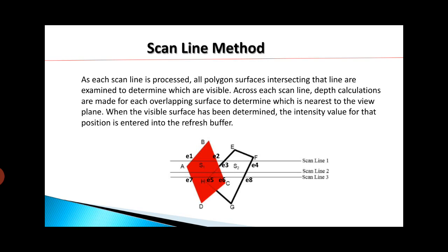Now, if you see in the figure, there are two polygons, S1 and S2. S1 polygon has vertices A, B, C, D and S2 polygon has vertices E, F, G, H. If you see scan line 1, it is intersecting edge AB at E1, edge BC at E2, edge EH at E3, and edge FG at E4.